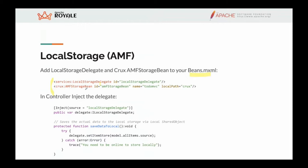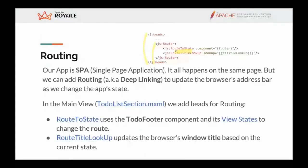Finally, routing. Since we have a SPA — single page application — everything happens on one page, but we may want the browser address to be updated with the state of the application. This is done with beads: we have a RouterBead with different components — in this case RouteToState and RouteTitleLookup — to configure routing. These components take the view states to get the information needed to change the state in the browser address.